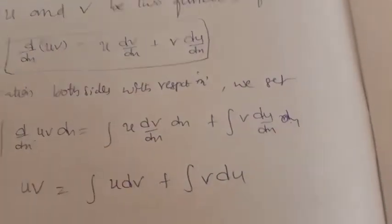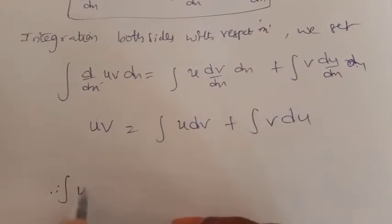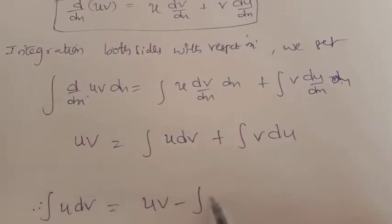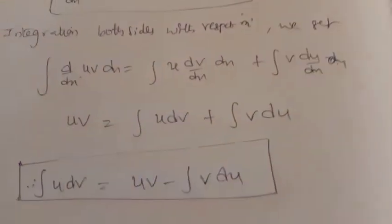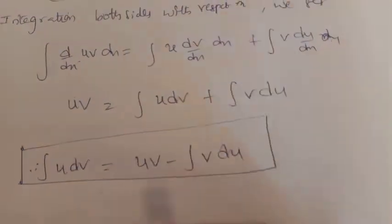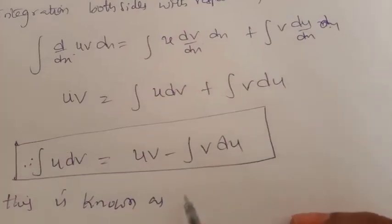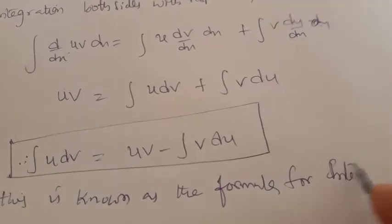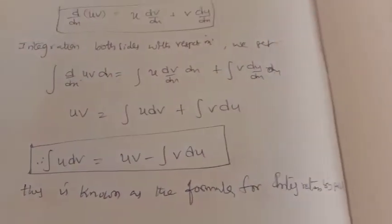Integration is the reverse process of differentiation. In this case, the formula becomes uv minus integral v du. That is: uv minus integral v du. This is the formula for integration by parts.